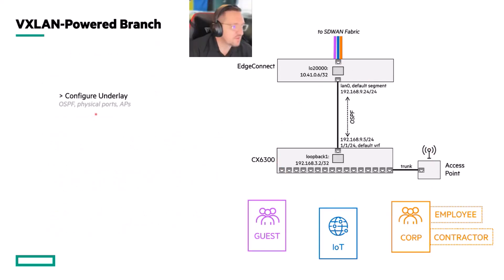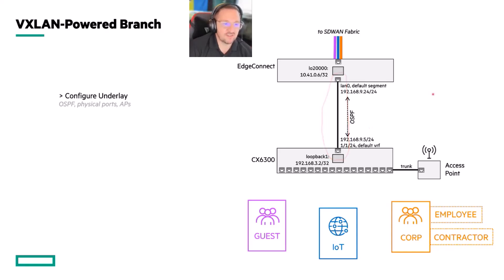The first step is to configure the underlay. What I mean is I've got my EdgeConnect here — I'm going to physically configure the ports, no tagging, just LAN zero, slap an IP on it, make sure it's in the default segment. And then on the CX switch, I've got another IP — just a point-to-point connection.